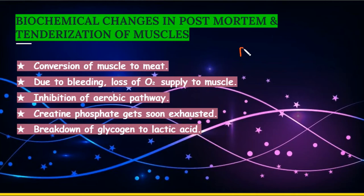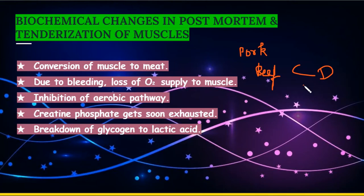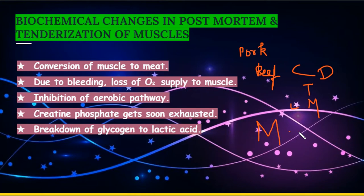The types of meat are pork, beef, chicken, duck, turkey, and lamb and mutton.